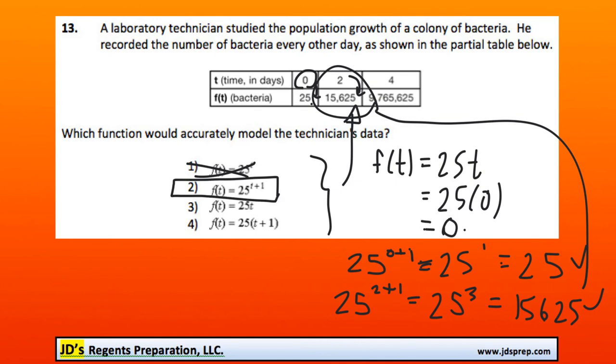Another way we could have figured out the solution is to use our graphing calculator. We could have plugged in all four functions and checked with the calculator to see if these points are on that function. Either way, either method works.